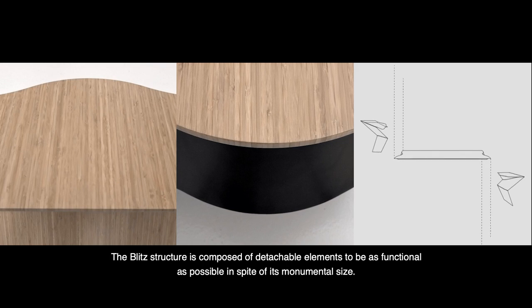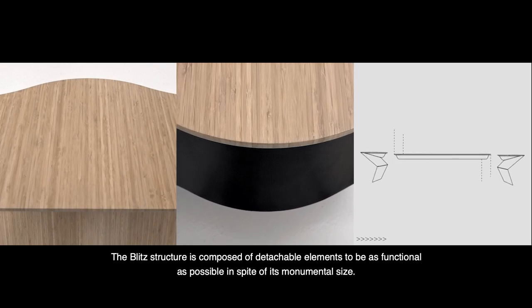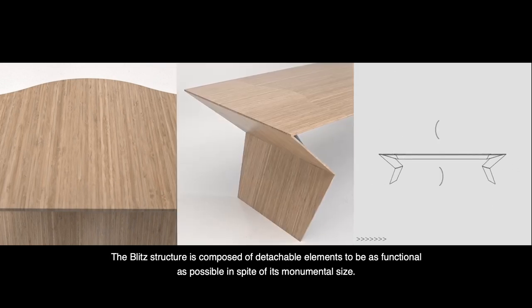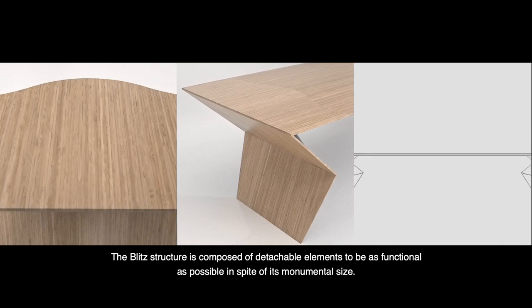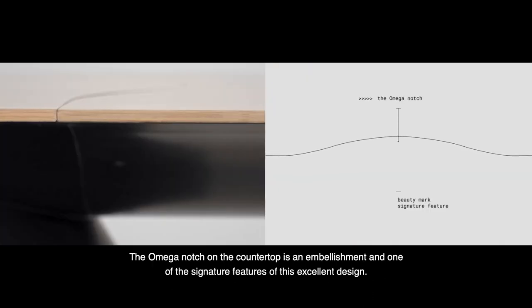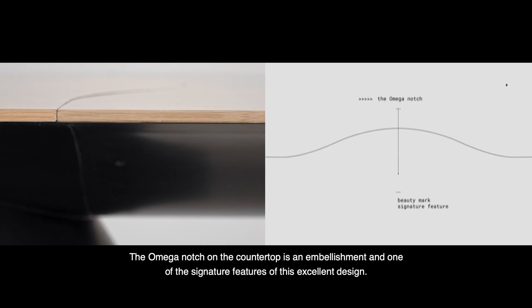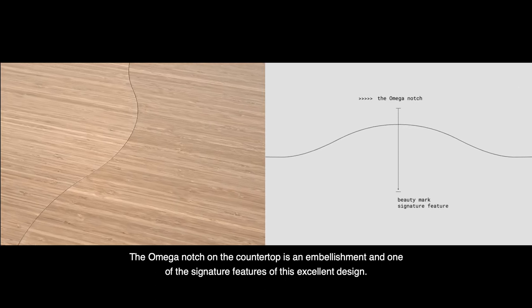The Blitz structure is composed of detachable elements to be as functional as possible, in spite of its monumental size. The Omega notch on the countertop is an embellishment and one of the signature features of this excellent design.